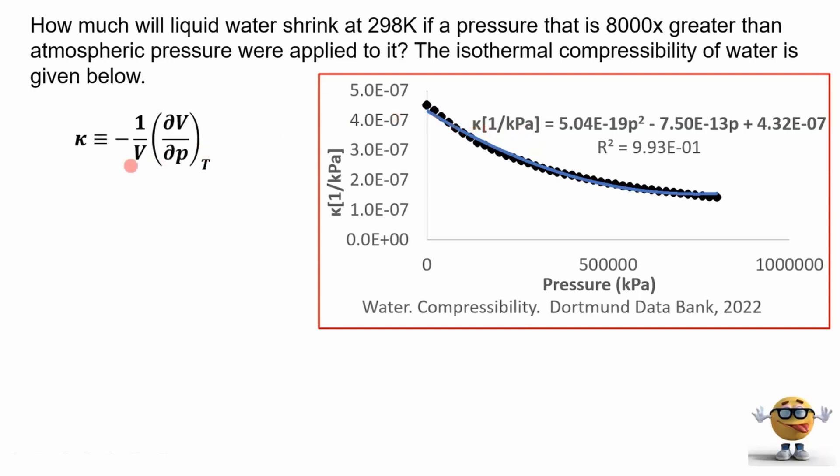So we're going to start off with the definition of what the isothermal compressibility is. And it's defined as negative 1 over the volume times the partial derivative of the volume with respect to pressure holding the temperature constant. This 1 over the volume is to ensure that this is an intensive property. Okay, so at this point, we're going to multiply both sides by dp to get negative kappa dp equals dv over v.